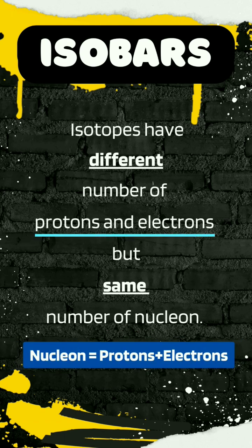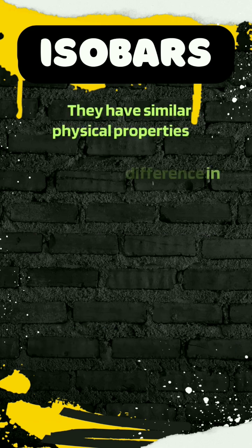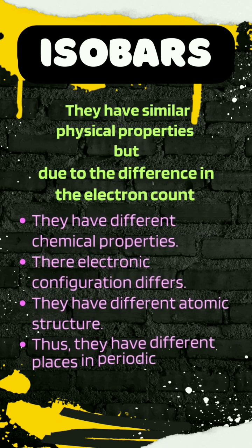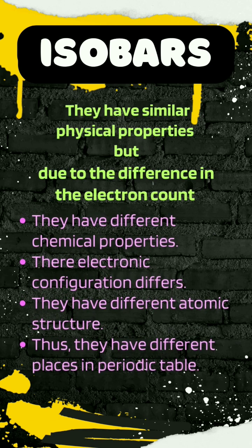Isobars have the same number of nucleons. They have similar physical properties, but due to the difference in electron count, they have different chemical properties. Their electronic configuration differs and they have different atomic structures as well.